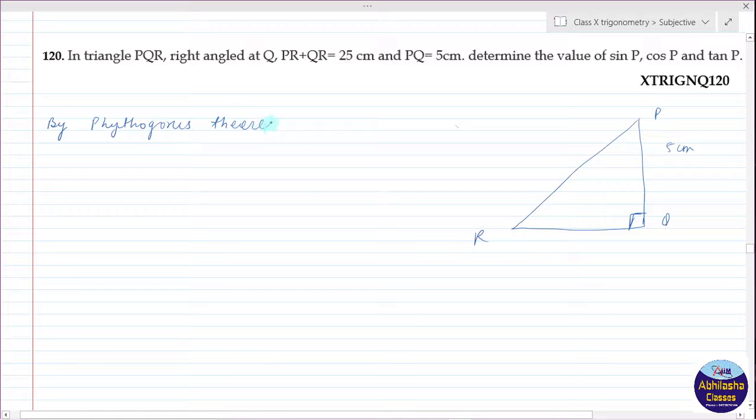We can write PR squared is equal to RQ squared plus PQ squared, is equal to RQ squared plus PQ. PQ we have as 5 centimeters, so it is 5 squared, that is 25.